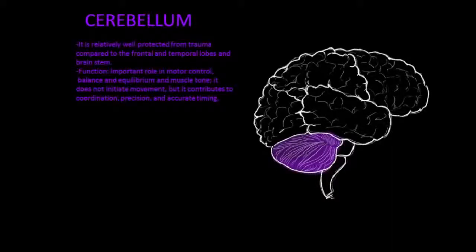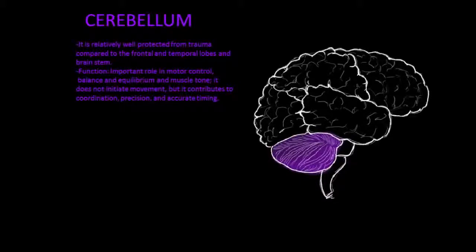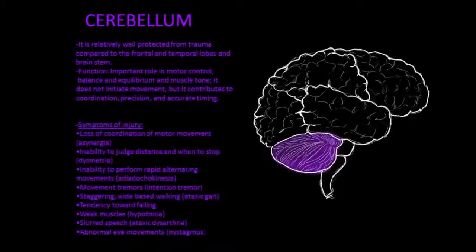The cerebellum has an important role in motor control, balance and equilibrium, and muscle tone. It does not initiate movement but contributes to coordination, precision, and accurate timing. It is relatively well protected from trauma compared to the frontal and temporal lobes and brainstem. The consequences of damage to the cerebellum include the loss of coordination of motor movement, the inability to judge distance, movement tremors, slurred speech, and abnormal eye movements.